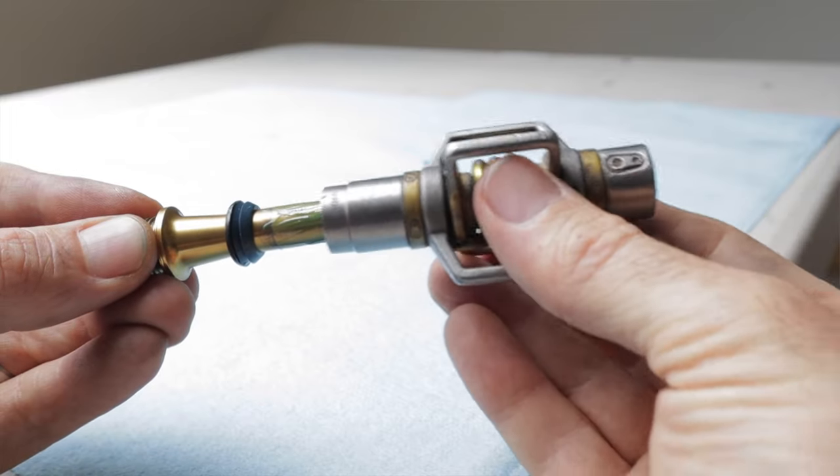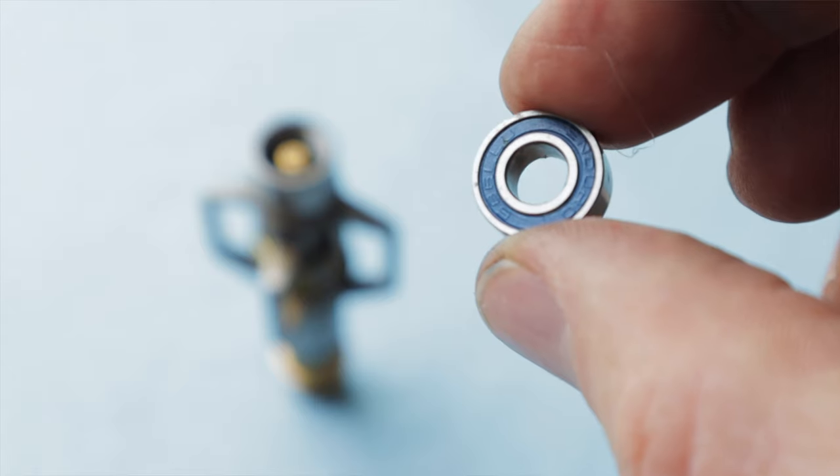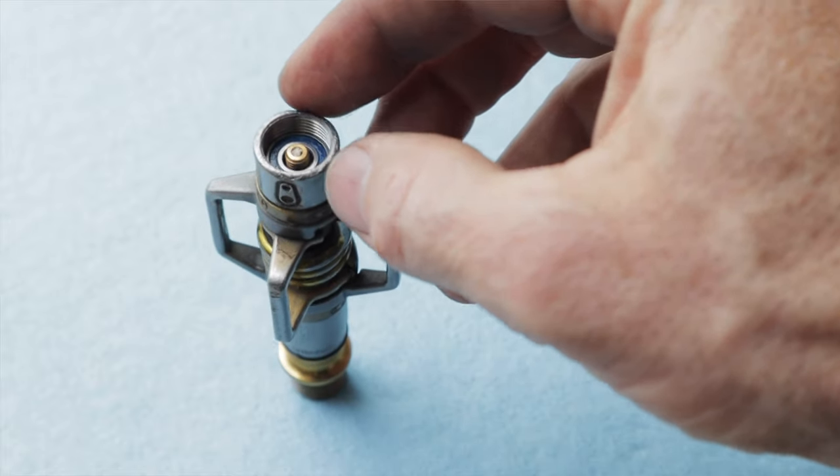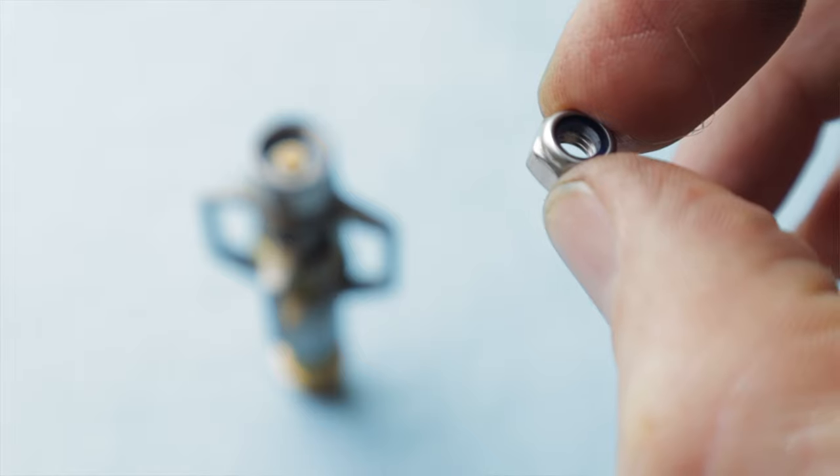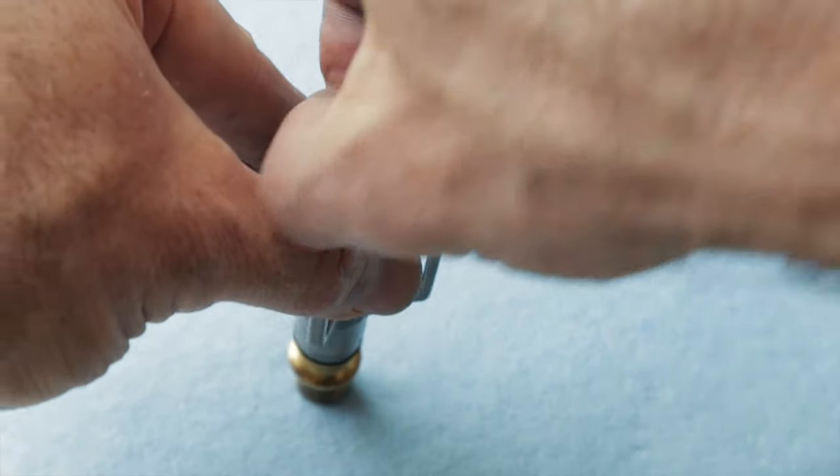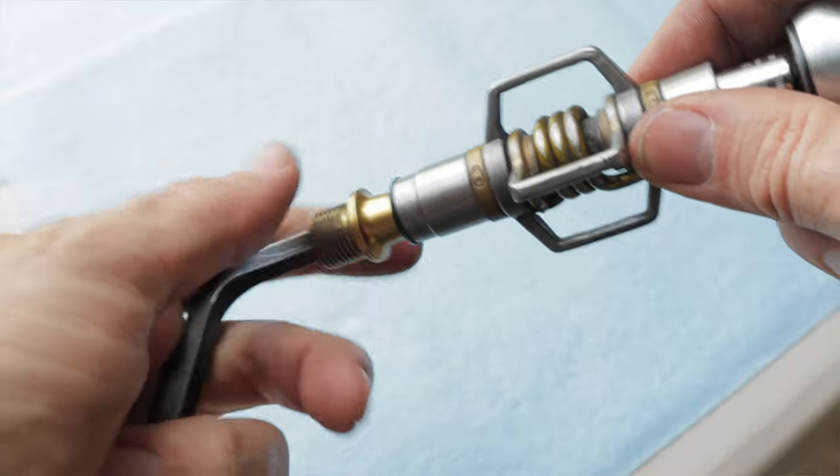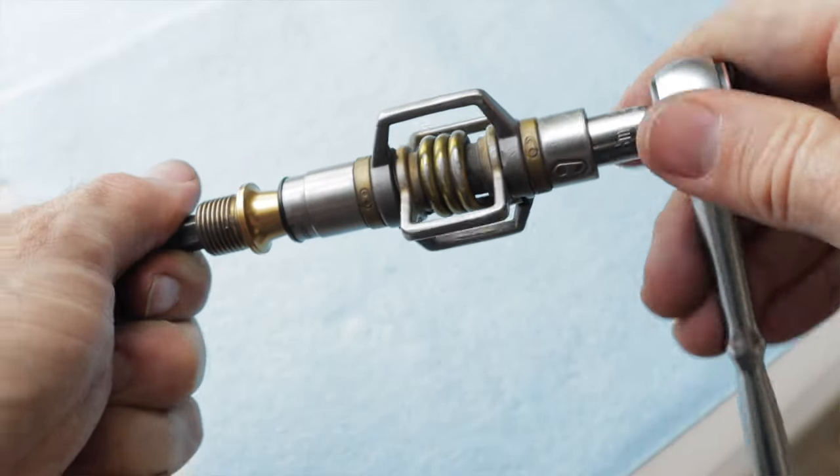Then we're going to slide the pedal body back over the spindle. Grab the new cartridge bearing and fit it over the spindle and push it down into place so the threads on the spindle are accessible. Next, we thread on the nylock nut and use the 8mm socket wrench to snug it up. Again, putting an 8mm Allen wrench in the spindle keeps it from spinning and makes life easier.